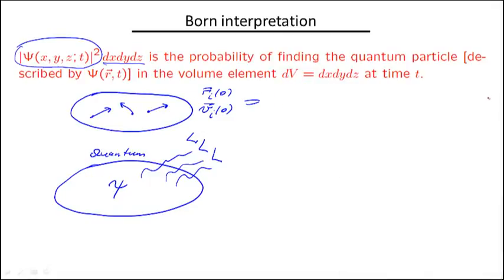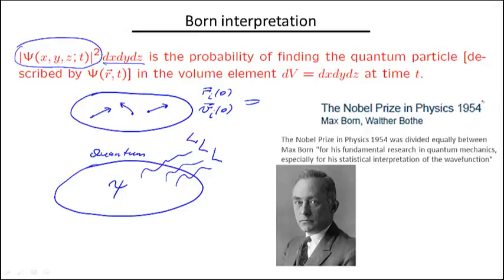This work of Max Born turned out to be extremely influential and groundbreaking, and he eventually received a Nobel Prize for these ideas in 1954. In fact, he should have received this award much earlier. He was nominated by Albert Einstein back in the 30s, but he didn't get it due to some political reasons.